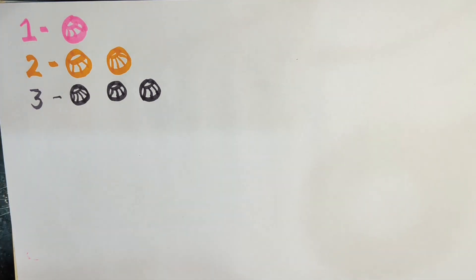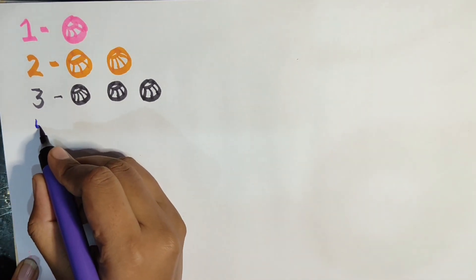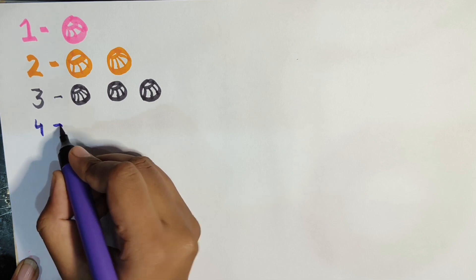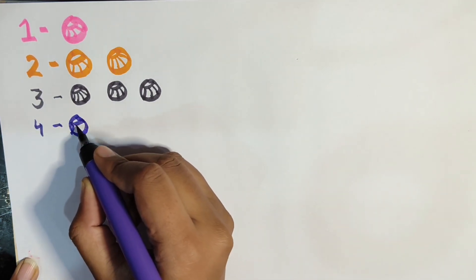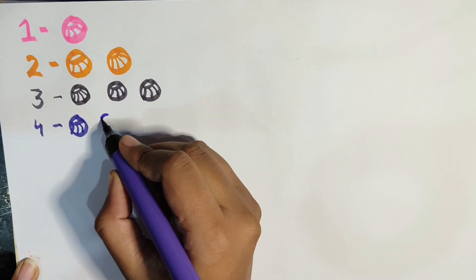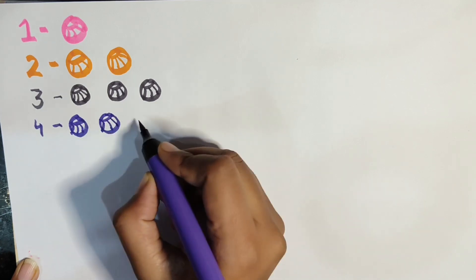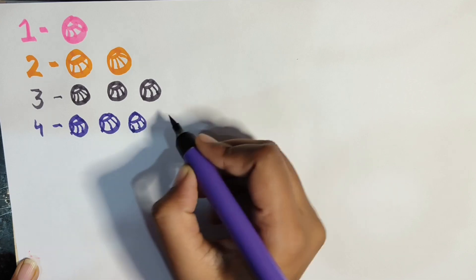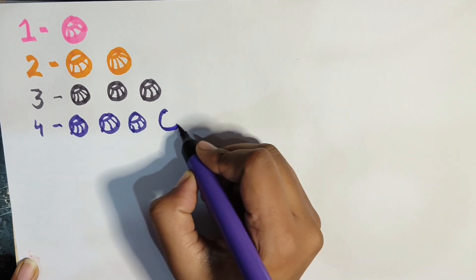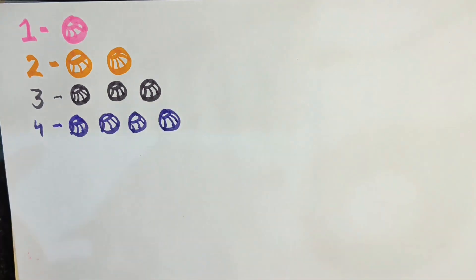1, 2, 3, 4. In front of 4, how many balls? 4 balls. 1, 2, 3, and 4.